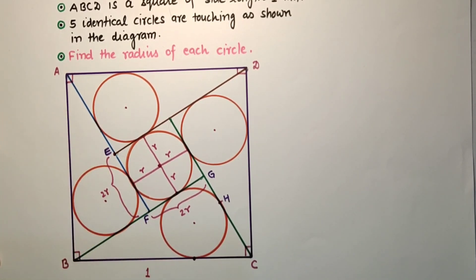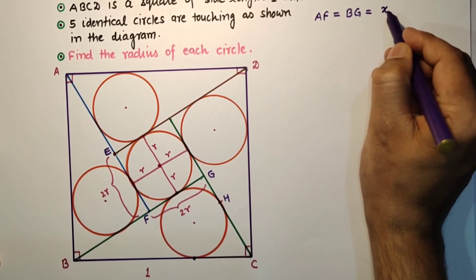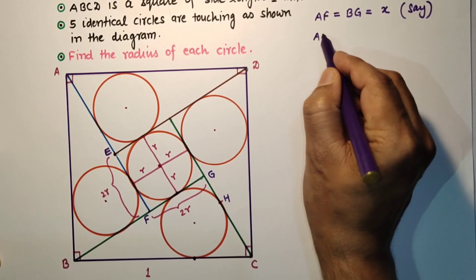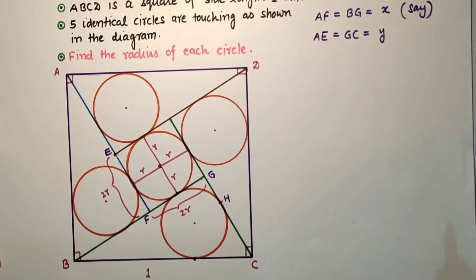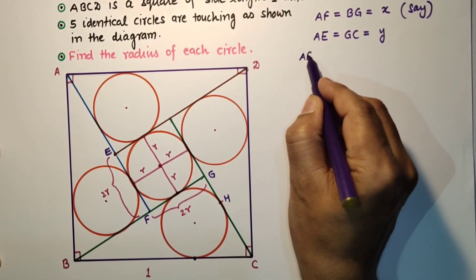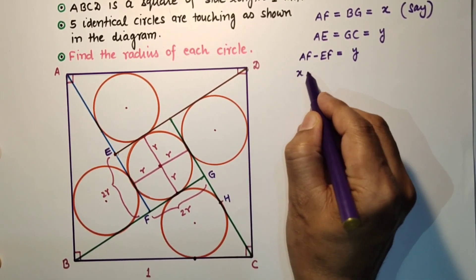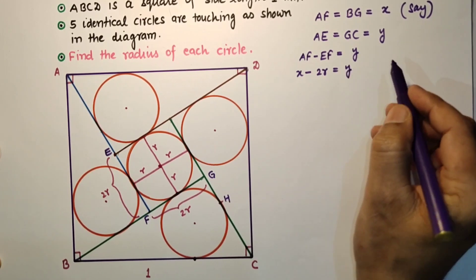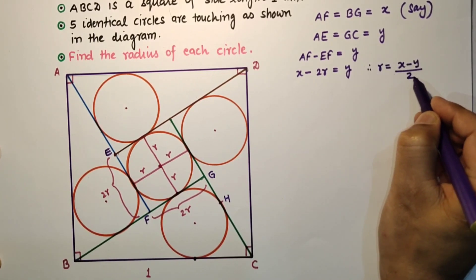Let AF and BG be X, so AF is equal to BG is equal to X. And let GC and AE be Y, so AE is equal to GC is equal to Y. Now AE is equal to AF minus EF. AF minus EF equals GC which is Y, and AF is X, so X minus EF. EF is R plus R, which is 2R. So we can say that R is equal to (X minus Y) divided by 2. This is our first relation between X, Y, and radius.